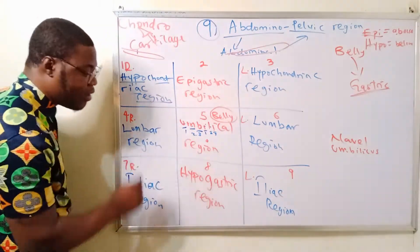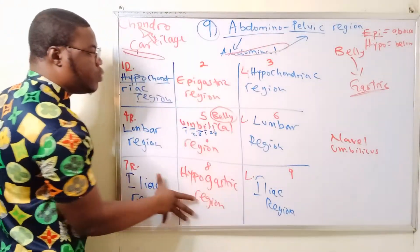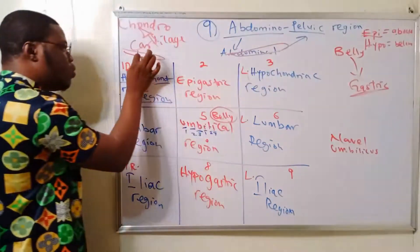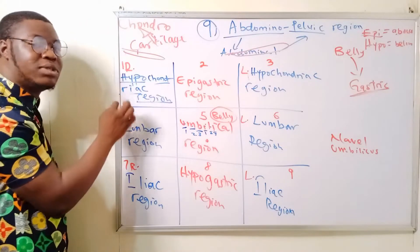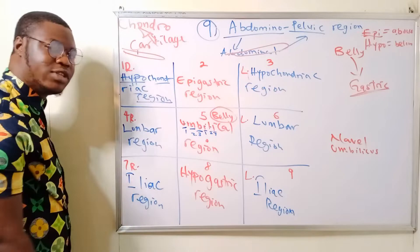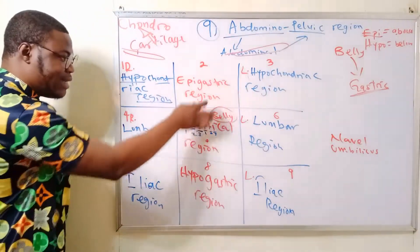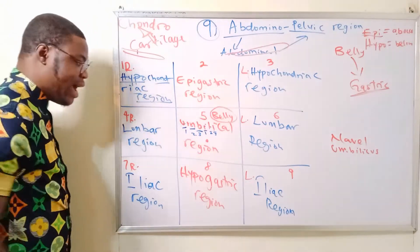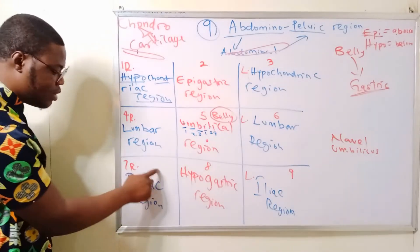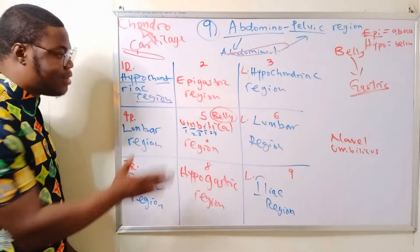Continuing the recap: the right and left hypochondriac regions are named because the thoracic cartilage — also called costal cartilage — sits above them. 'Hypo' means below that cartilage, giving us the hypochondriac regions. The lumbar vertebra is at the posterior part, and the two sides on either side are called the lumbar regions. And the iliac regions are closely related to the iliac crest of the pelvis.